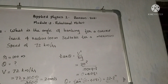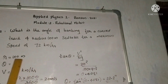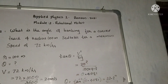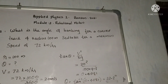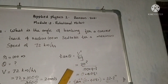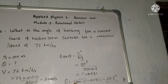The angle of banking formula is tan θ = v² / (R × g). Substituting: 20 squared divided by 100 into 9.8 gives 0.4081. Therefore θ = tan inverse of 0.4081, which equals 22.2 degrees.